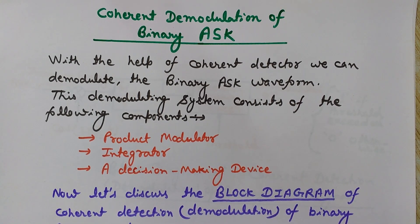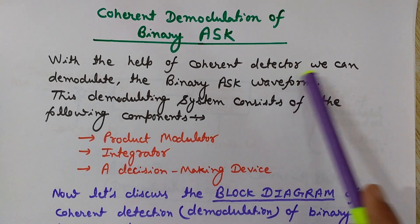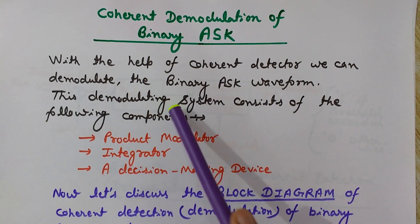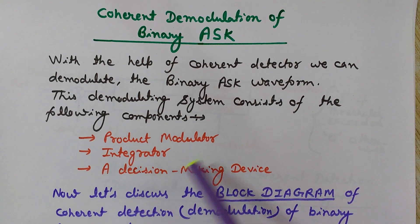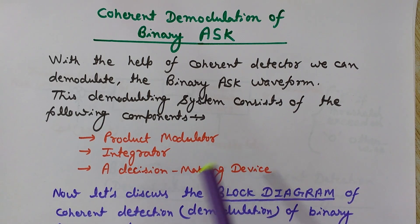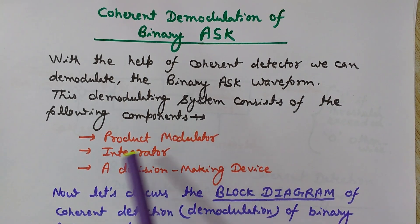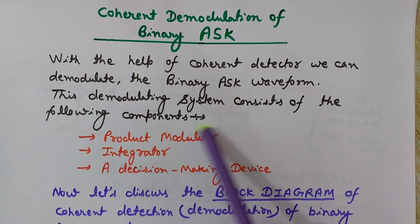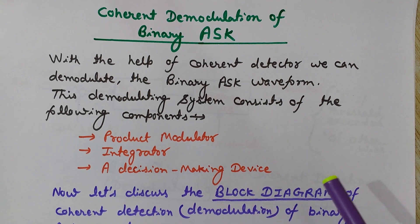The requirement of coherent detection is carrier synchronization. The benefit of coherent detection is that error probability decreases, but the system becomes complex, which is a disadvantage. Using a coherent detector we can demodulate the binary ASK waveform. This demodulation system consists of three components: the product modulator, the integrator, and the decision making device. In the next section we will see a block diagram containing all three components of this demodulation system.